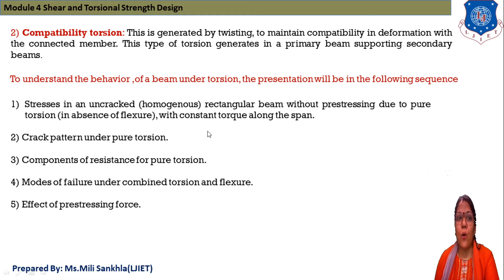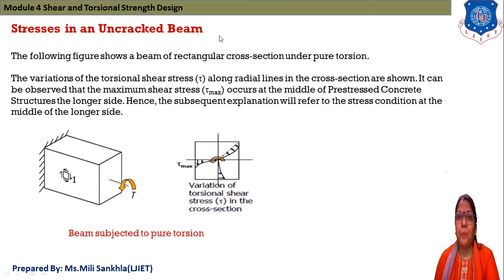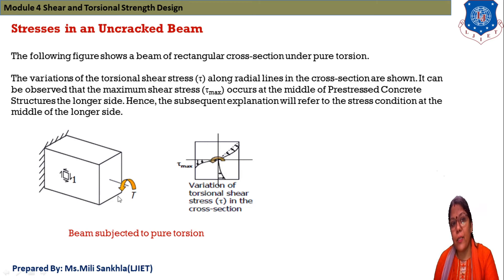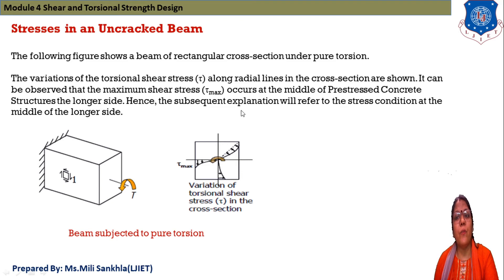Now, stress in an uncracked beam — when the beam is not cracked, what will be the stress criteria according to torsion? The following figures show a beam with a rectangular cross-section under pure torsion. This is a cantilever beam, and the middle portion is the section subjected to torsion. The variation of torsional shear stress tau along the radial lines in the cross-section is shown. It can be observed that the maximum shear stress tau-max occurs at the middle of the longer side.